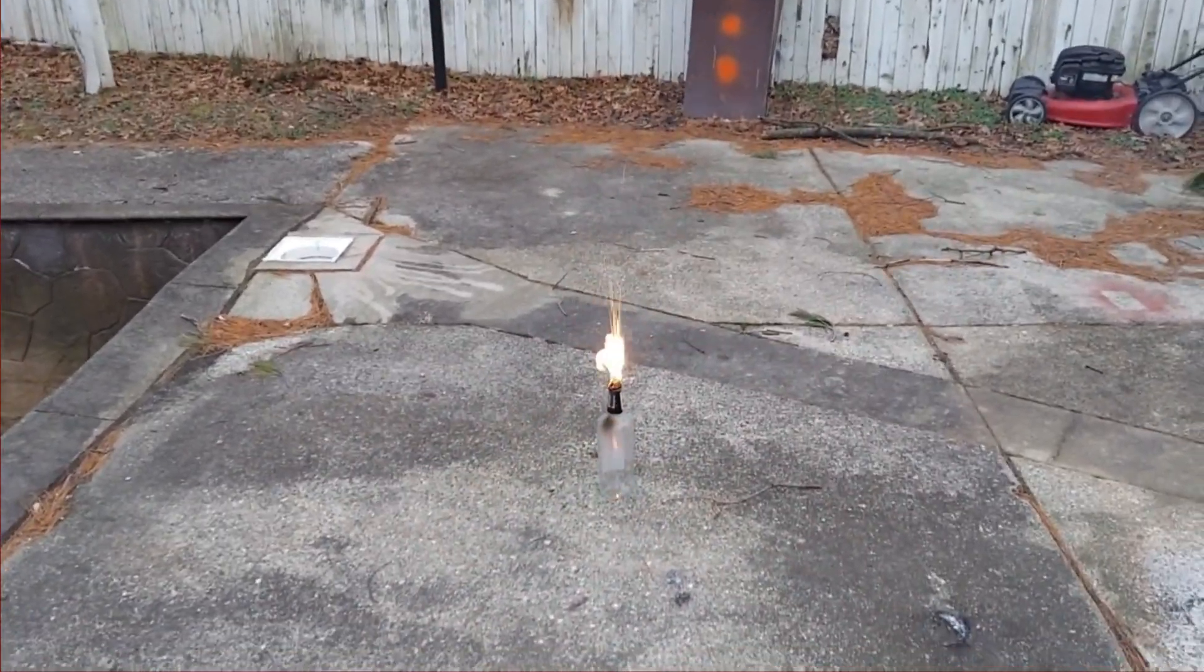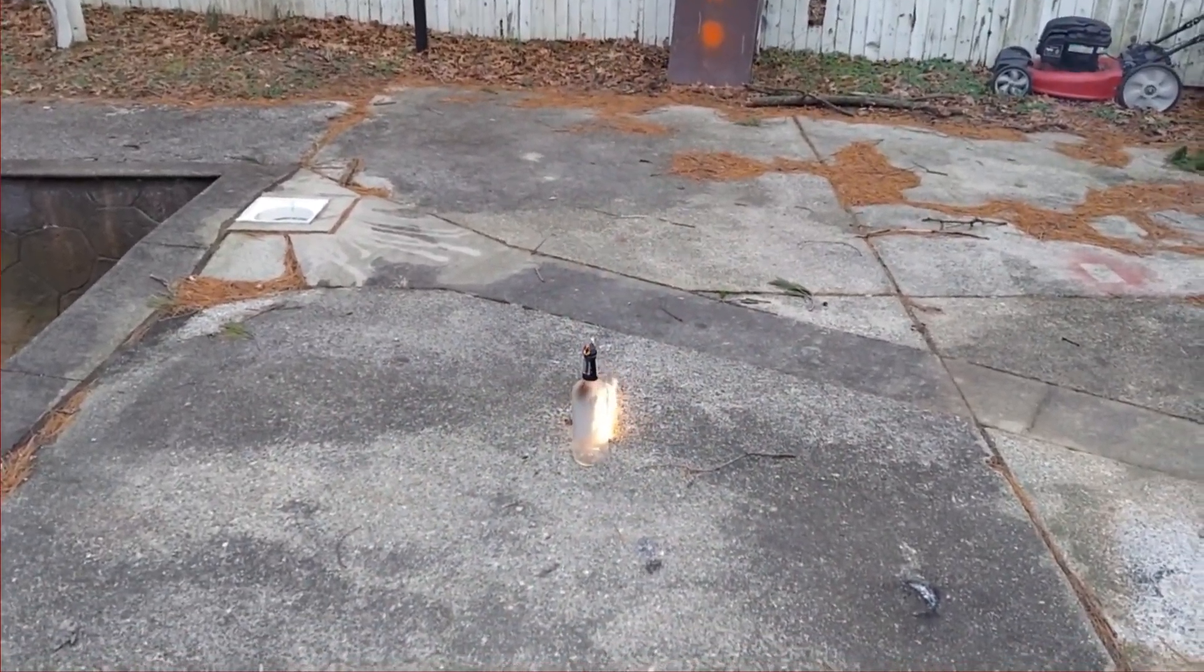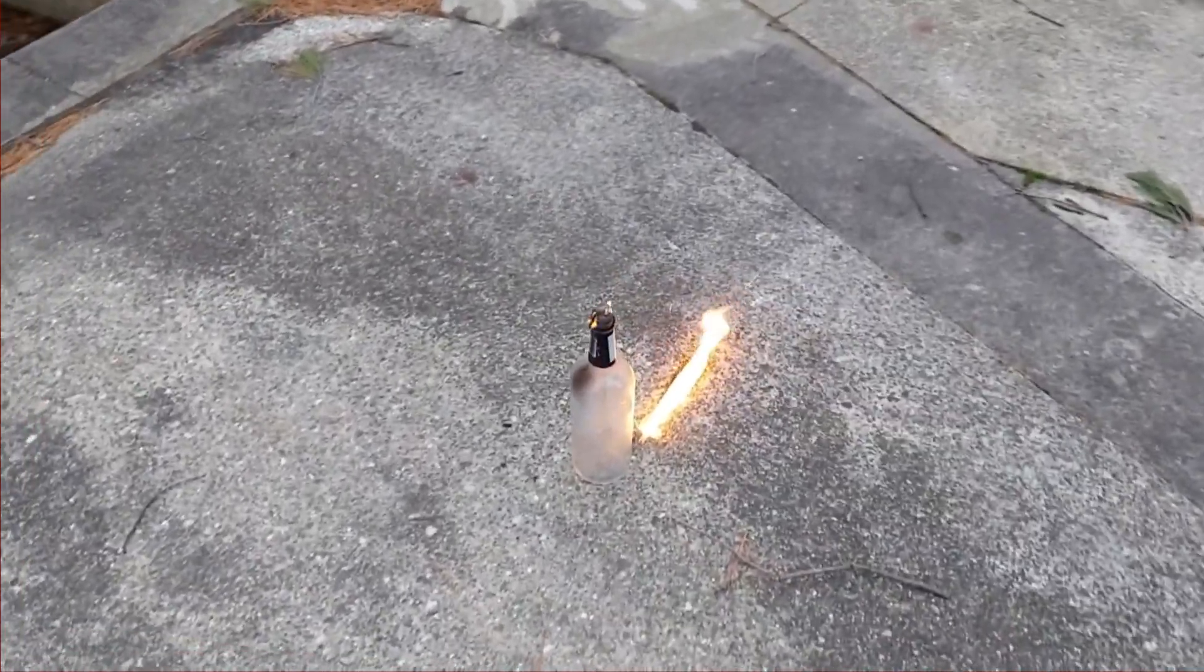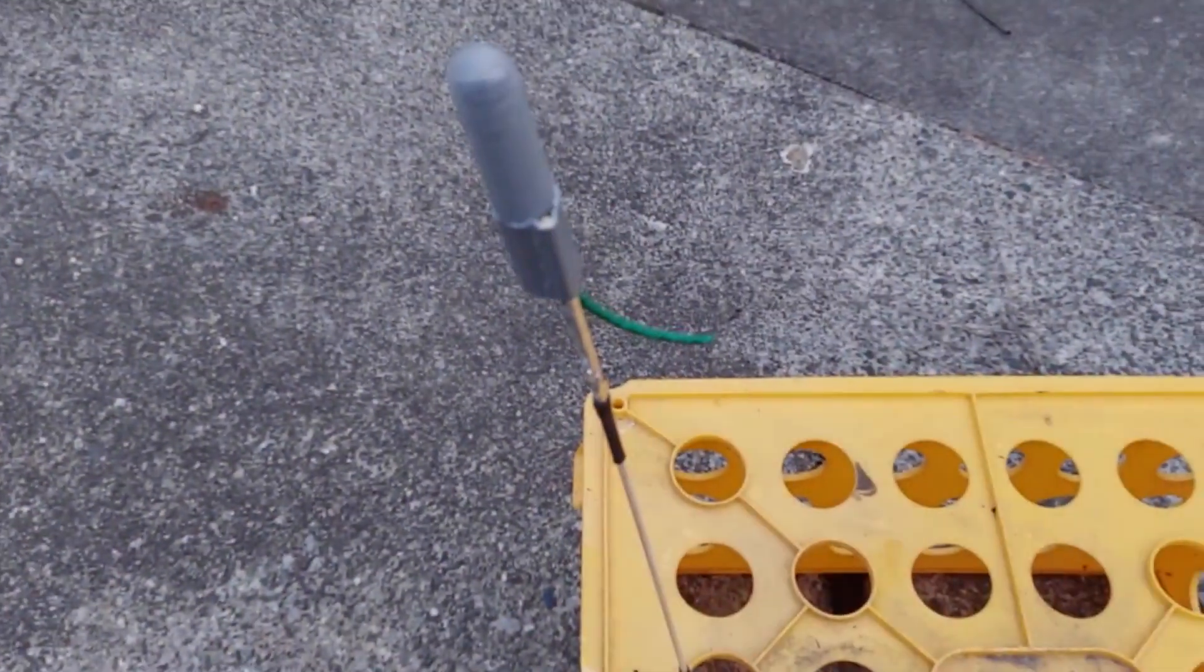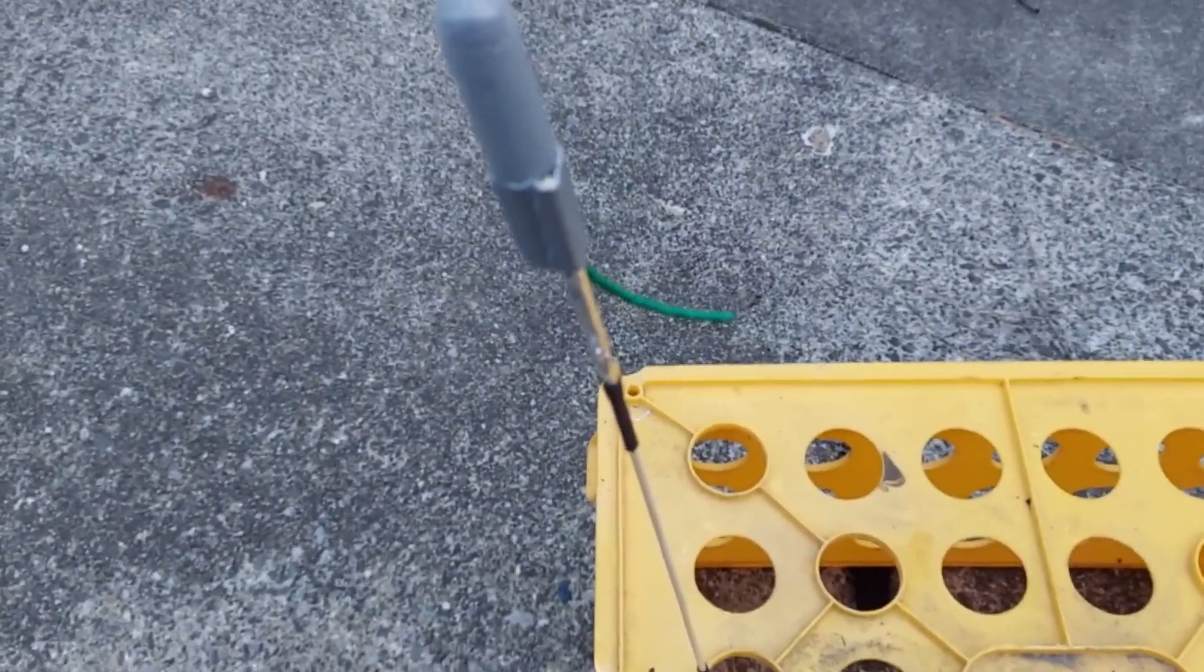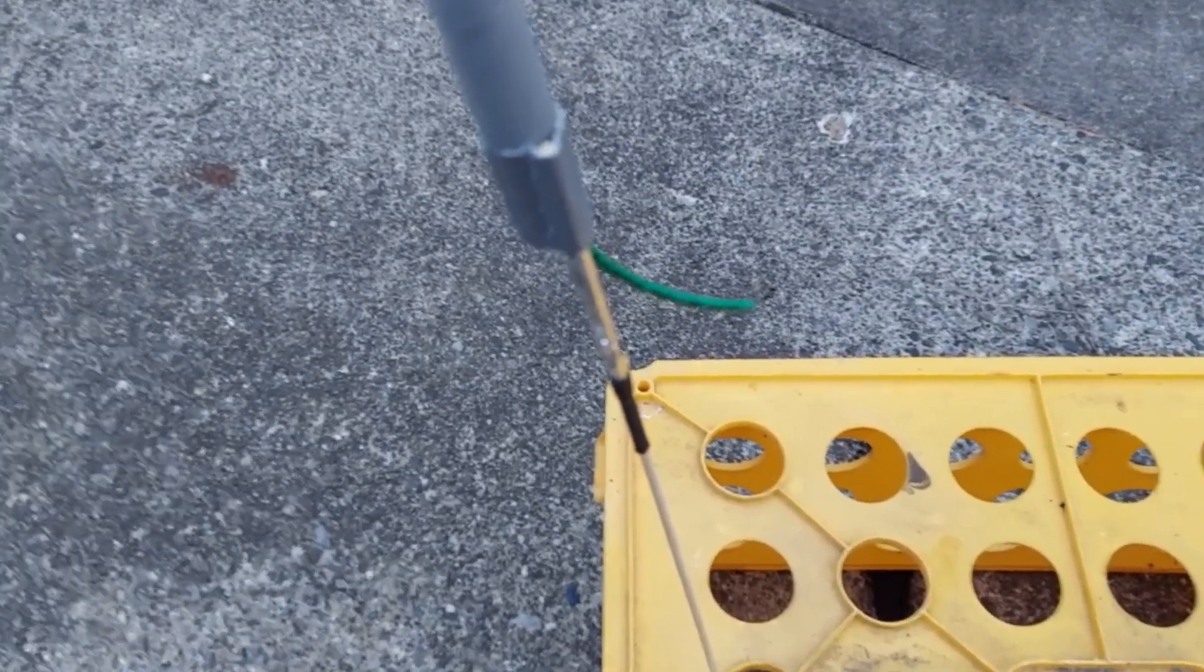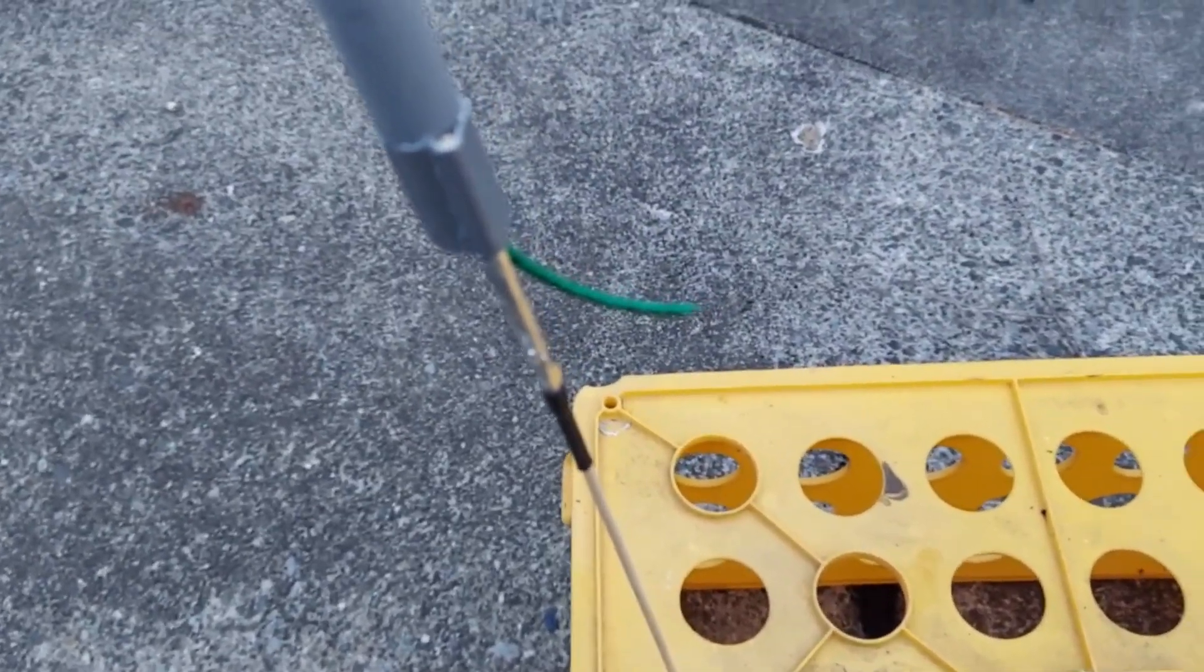Getting the third mix bottle rocket here which was ammonium perchlorate 14 grams, aluminum 2 grams and silicone 4 grams. Well this is most interesting.